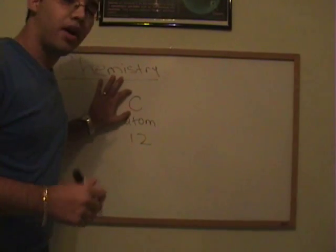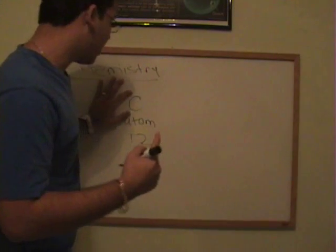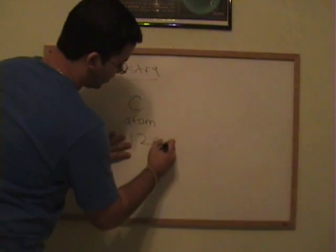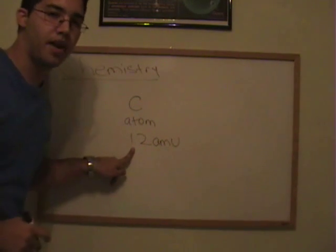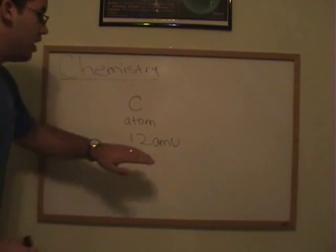However, if you're talking about one individual carbon atom, we refer to it as AMUs. So one carbon atom weighs 12 atomic mass units, or 12 AMU.